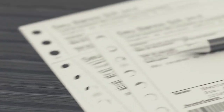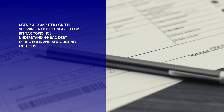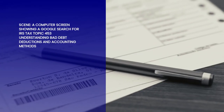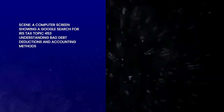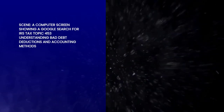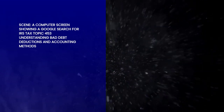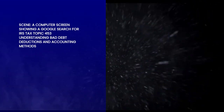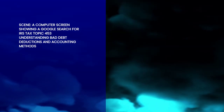We will first do a Google search for IRS tax topic 453. You will find it explains the following information: if someone owes you money that you can't collect, you have a bad debt.